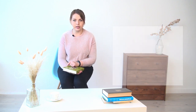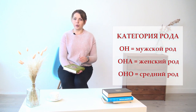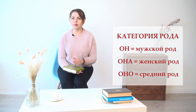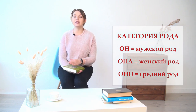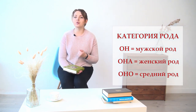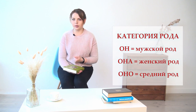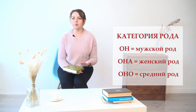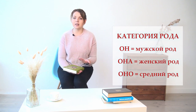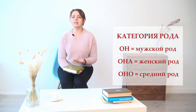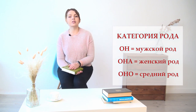Этот грамматический признак выделяется только у личных местоимений третьего лица единственного числа. Он — мужской род. Она — женский род. Оно — средний род. В предложениях местоимение он используется вместо существительных мужского рода, она — вместо существительных женского рода, оно — вместо существительных среднего рода.